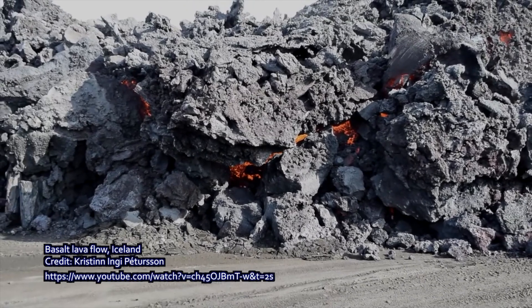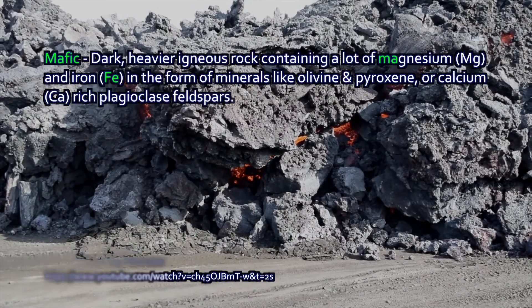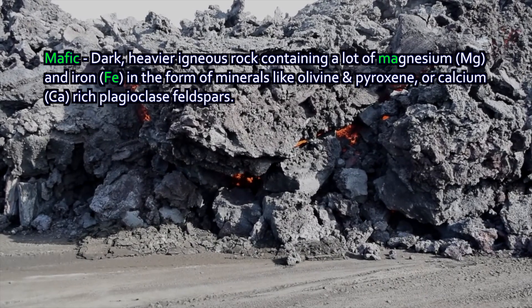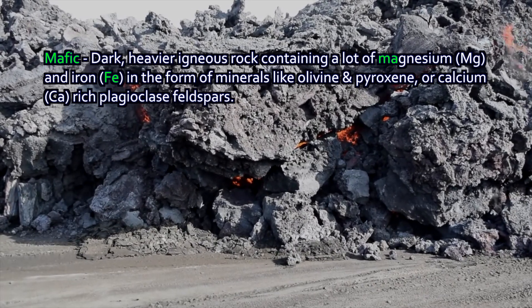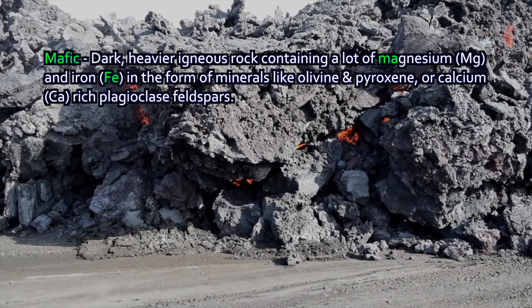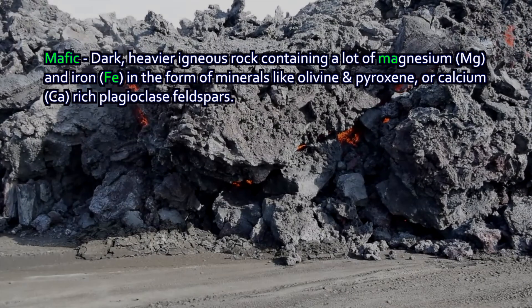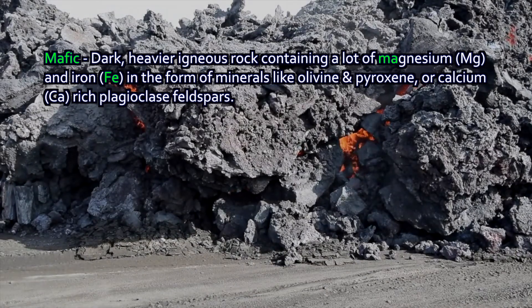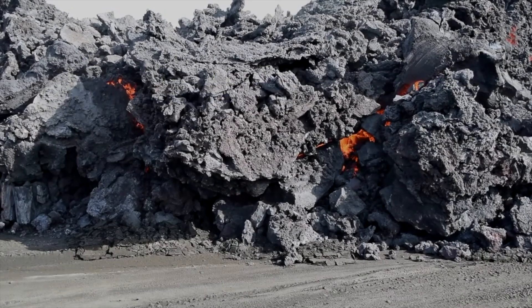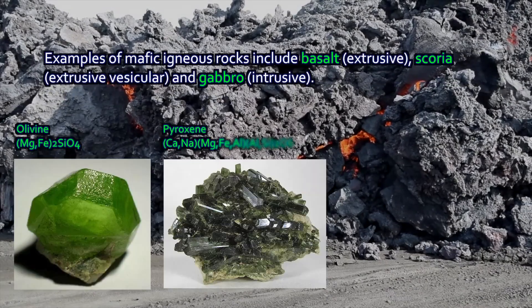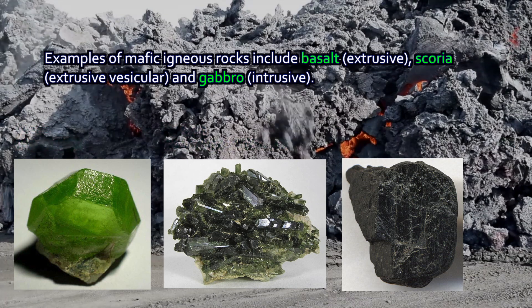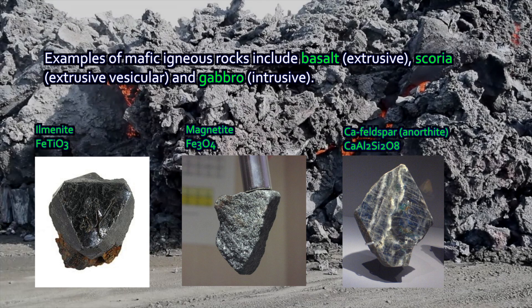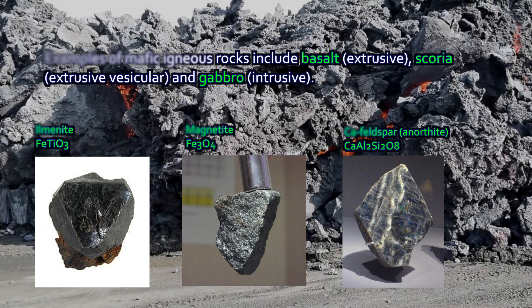Igneous rocks can be considered mafic or felsic, or intermediate between the two. Mafic is a contraction of the words magnesium and iron, and it's a geological term that applies to an igneous rock that is dense, heavy, and dark. Dark igneous rocks are dark because they contain dark minerals — minerals that contain lots of magnesium and iron: olivine, pyroxene, amphiboles like hornblende, ilmenite and magnetite, dark calcium-rich feldspar — that are dense and heavy with iron and magnesium.